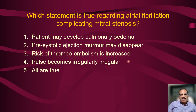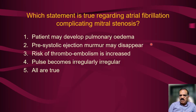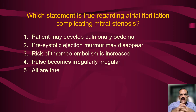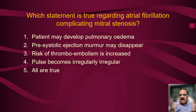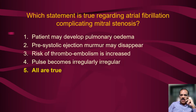The correct answer is all are true. Pulmonary edema is a complication due to increased left atrial pressure transmitted backward. Pre-systolic accentuation disappears in atrial fibrillation because there is no left atrial contraction. Atrial fibrillation itself is a risk for thromboembolic phenomenon, and when it develops over mitral stenosis that risk increases further. Pulse becoming irregularly irregular is a classic feature of atrial fibrillation. So all statements are true regarding atrial fibrillation developing in a case of mitral stenosis.